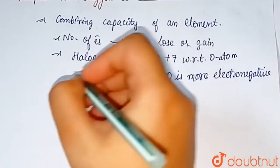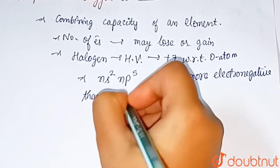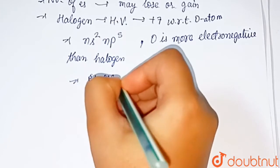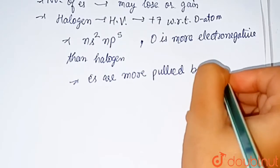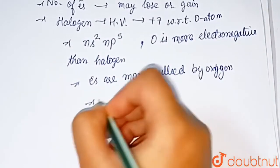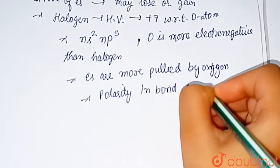...than halogen, and electrons are more pulled by oxygen, and its polarity in bonds generates high oxidation states.